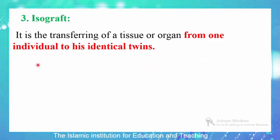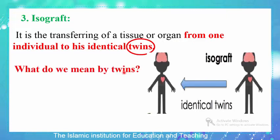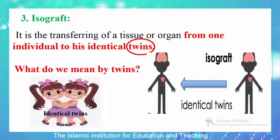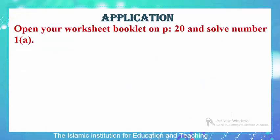The third type of graft is the isograft. In this type, there is a transferring of a tissue or organ from one individual to their identical twin. Twins means two children born at the same time from the same mother. Twins can be identical — exactly the same in their appearance 100% — or fraternal twins, which are similar in appearance but not identical. When we talk about an isograft, it must occur between identical twins.